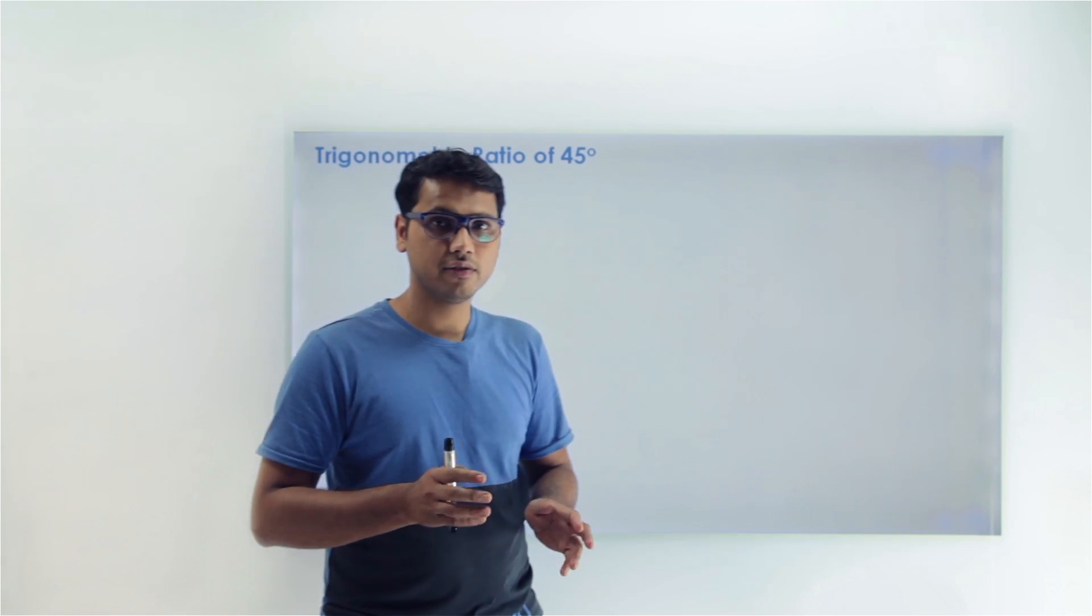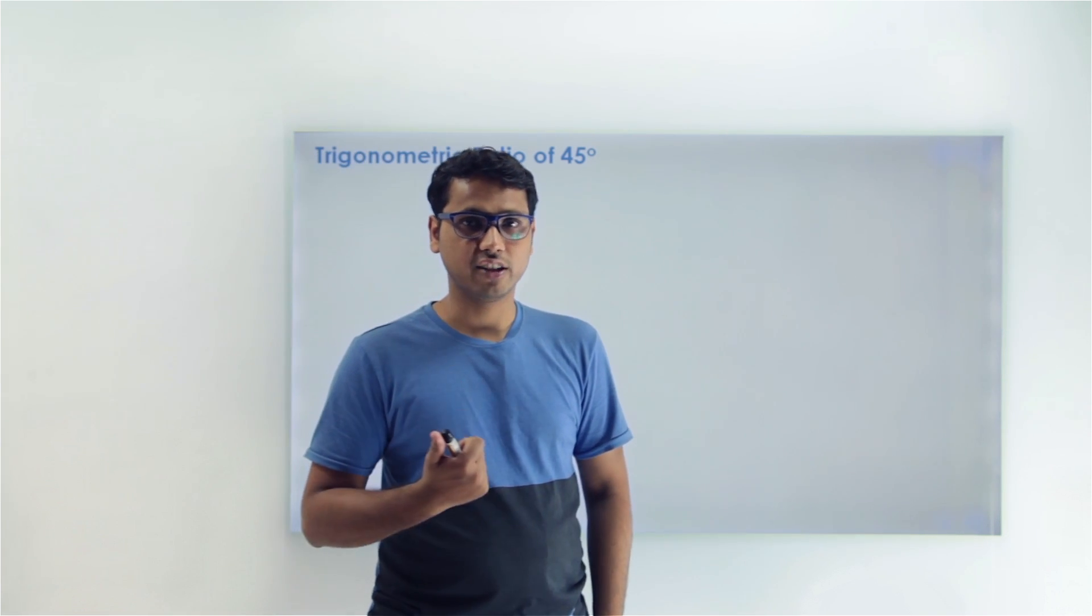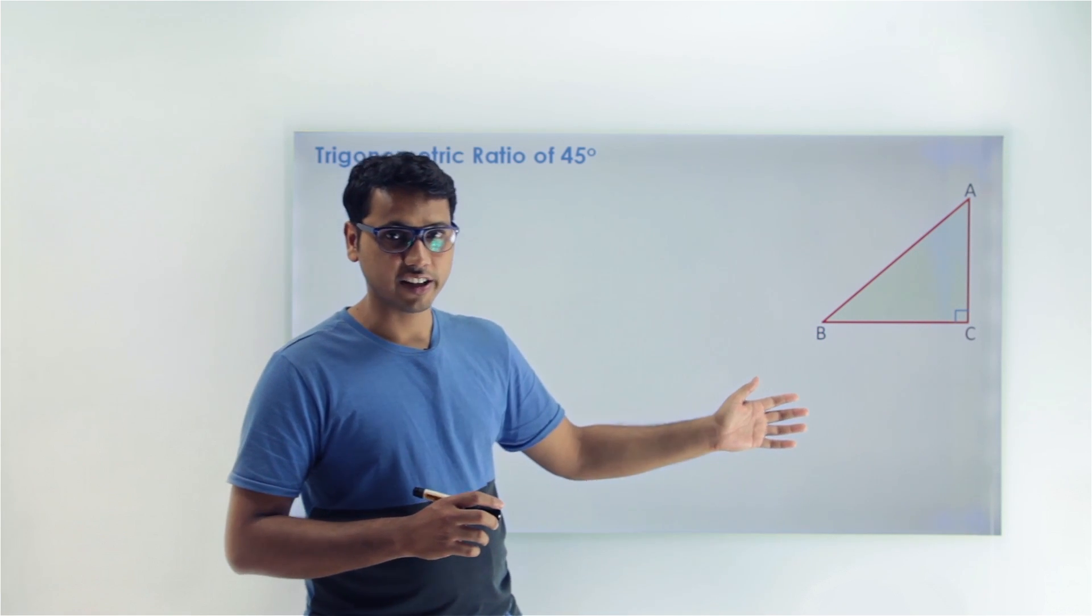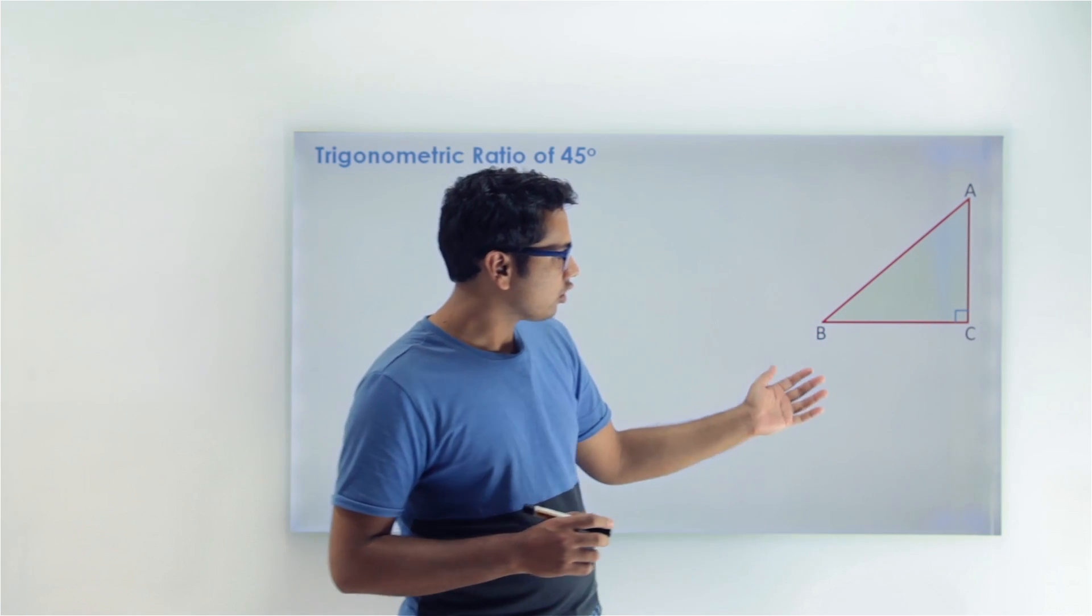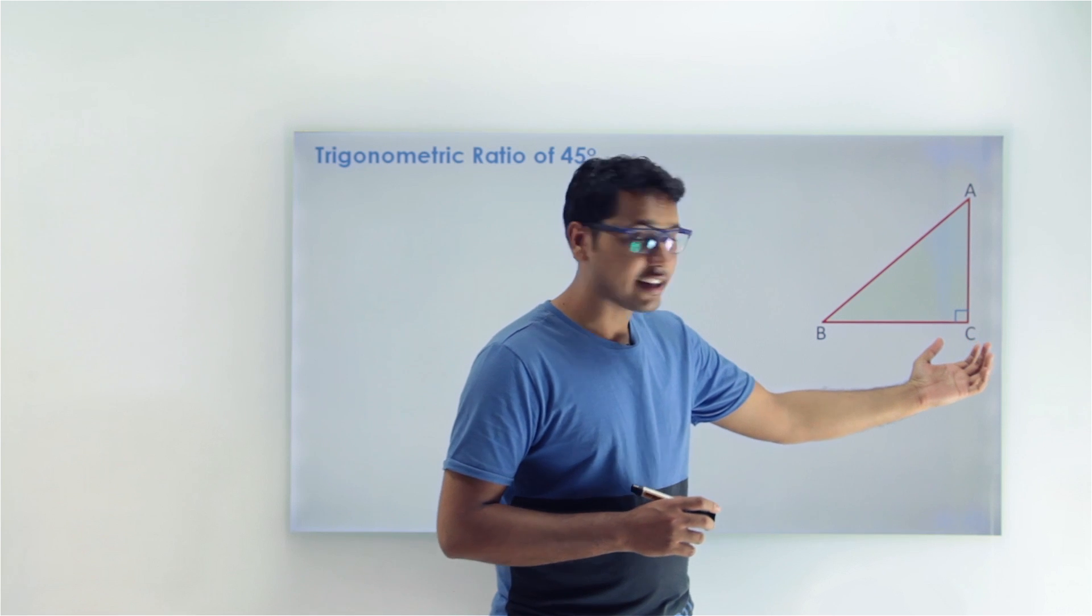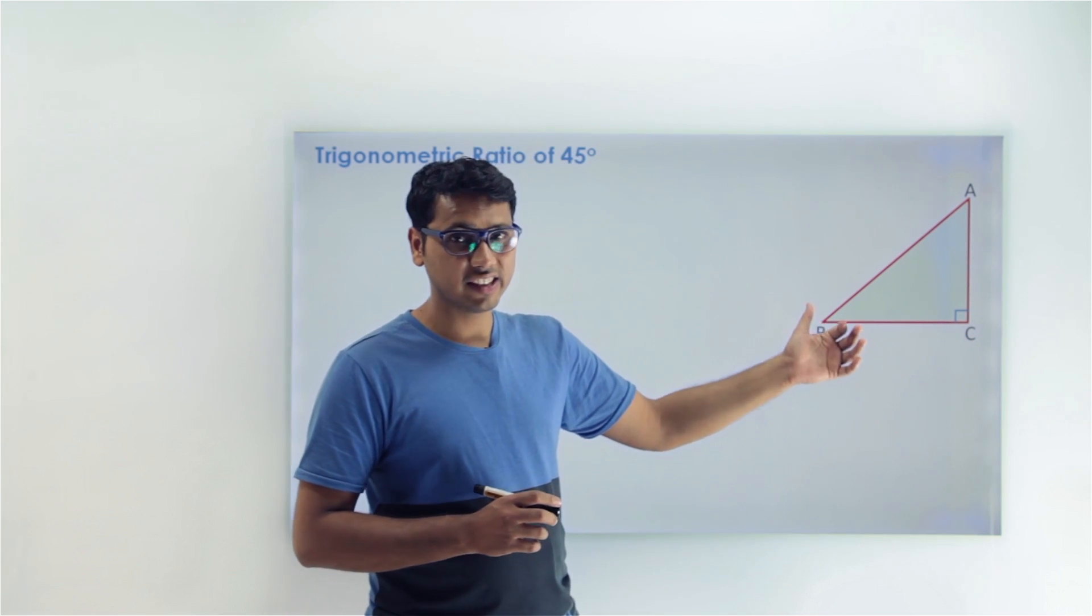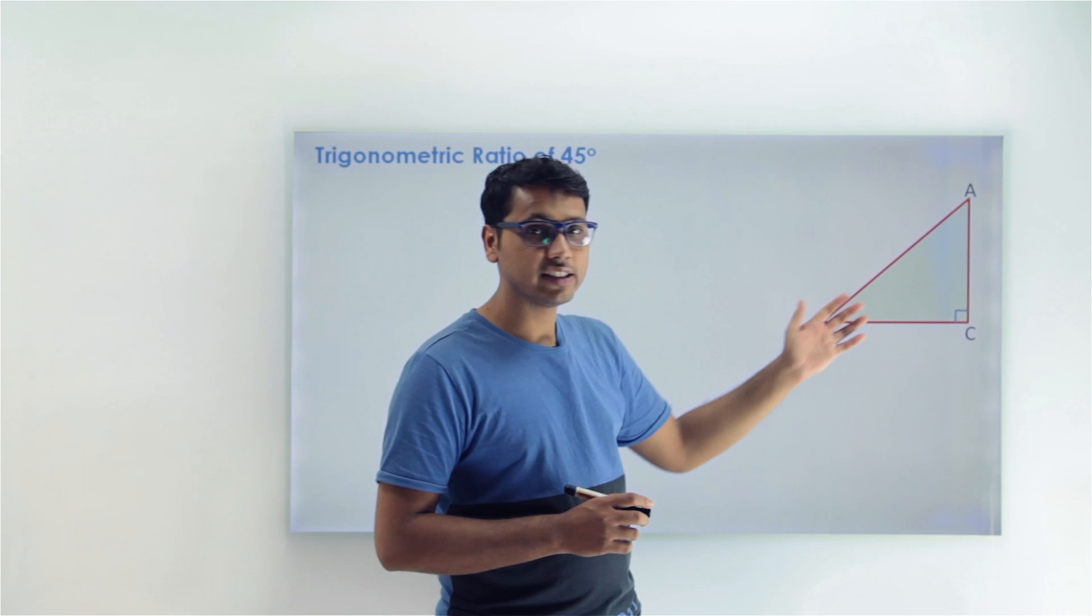For this, we will draw an isosceles triangle first. You will get to know why we had drawn the isosceles triangle only here. Now if you look, we have a right angle at C, and as the property of an isosceles triangle says, two sides are equal.